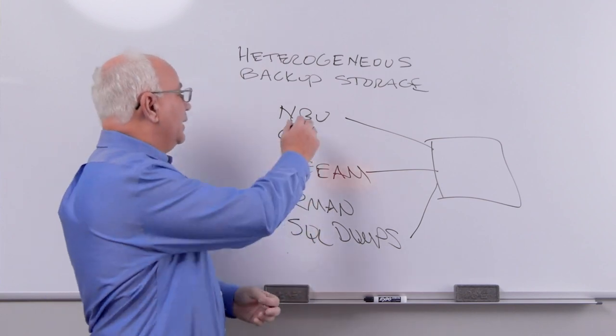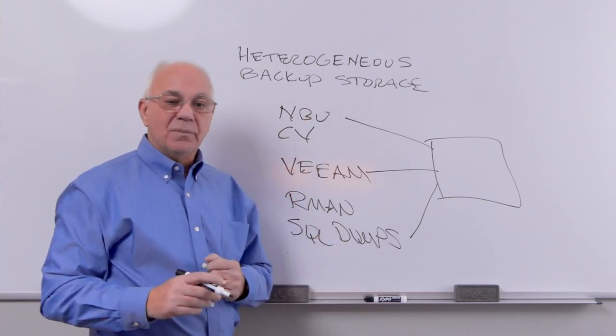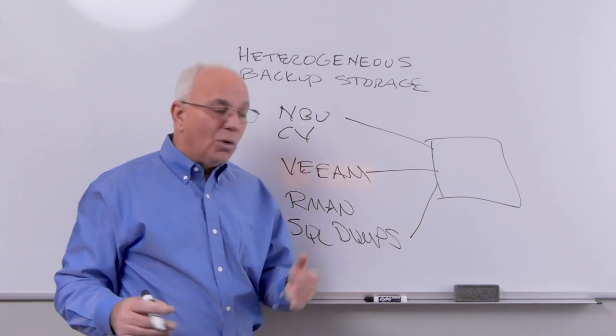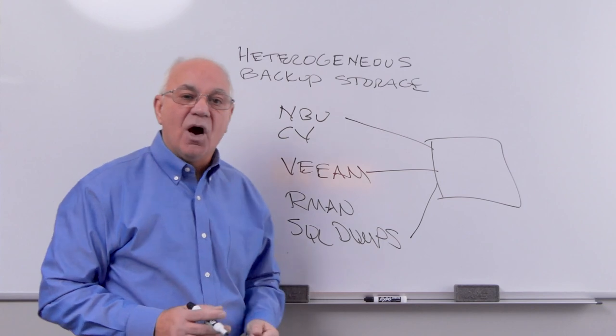For example, NetBackup to their appliances only works with NetBackup, but not with Veeam. Or Commvault Hyperscale X only works with Commvault, but not with Veeam and, let's say, RMAN.